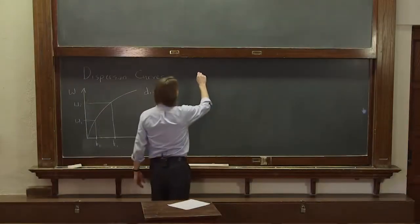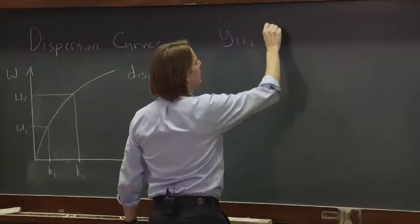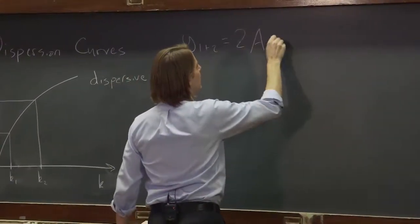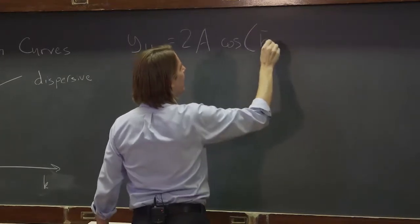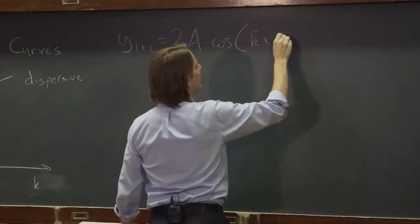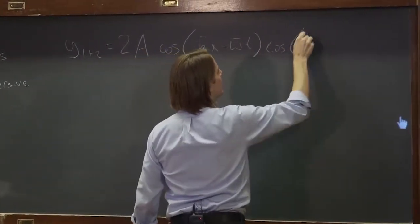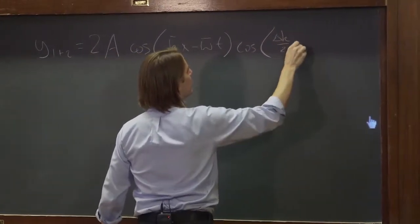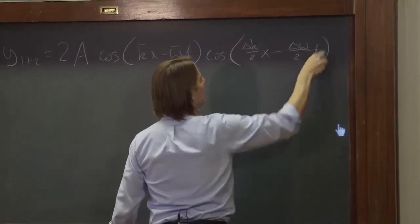Let me lay down some dispersive beats. So y of 1 plus 2 is 2a cosine, and it must be the k average x minus the omega average t times the cosine of delta k over 2x minus delta omega over 2t.